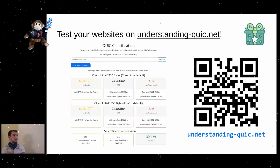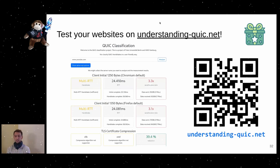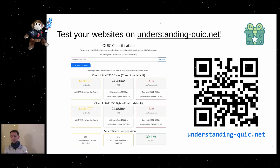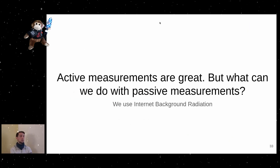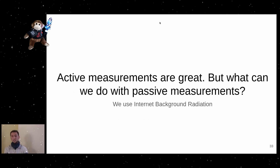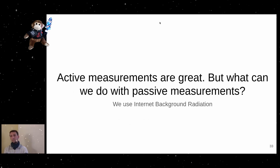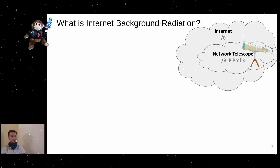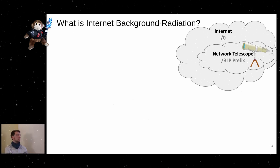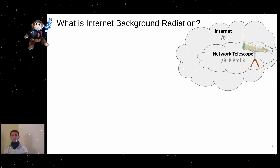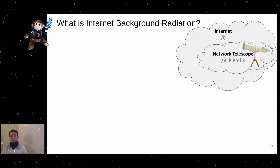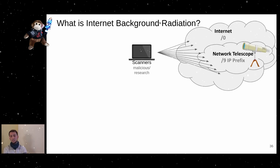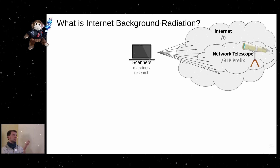During the IETF hackathon, we built a service where you can input your domain and find out how well the QUIC handshake works. Now, beyond active measurements, we also explored passive measurements using Internet Background Radiation — IBR. A quick reminder: the internet is slash-zero, and a network telescope is part of the internet at a different address block. Scanners that scan the entire internet send packets everywhere, and if the address is within our telescope range, we see those packets.